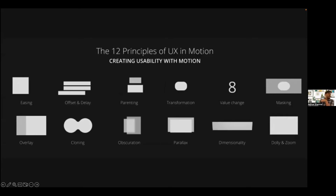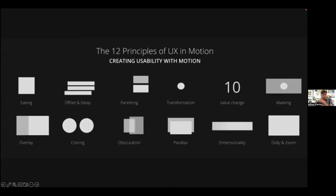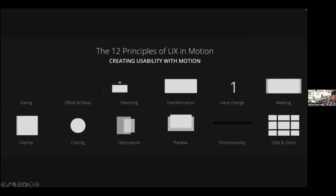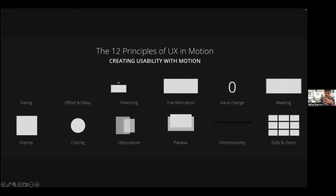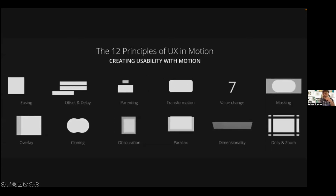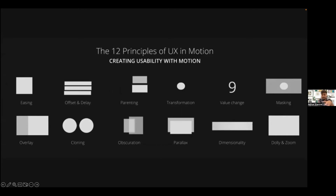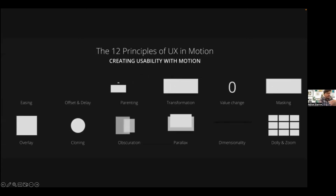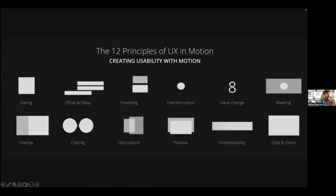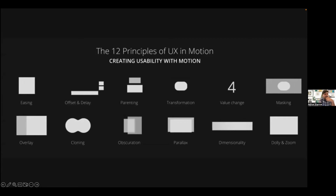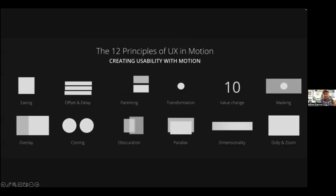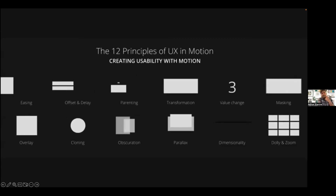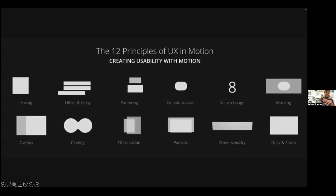Before going to After Effects, here are the 12 UX motion principles applicable whenever we create any kind of animation: easing, offset and delay, parenting, transformation, value change, masking, overlay, cloning, obscuration, parallax, and dimension. You can relate these to interactions you've definitely seen in some form, and they form the basis of how micro interactions are designed.